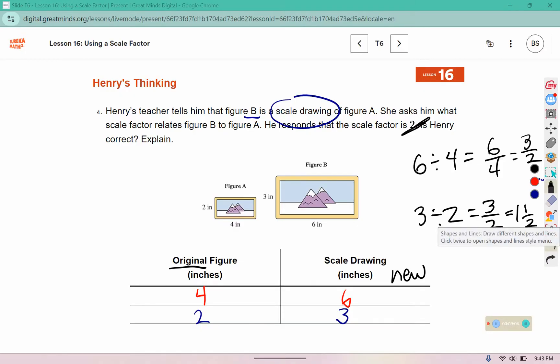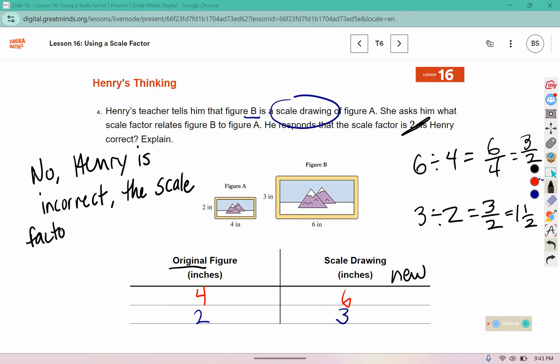So is Henry correct? No. Henry is incorrect. The scale factor is 3/2, not 2 like he said.